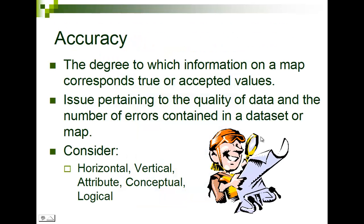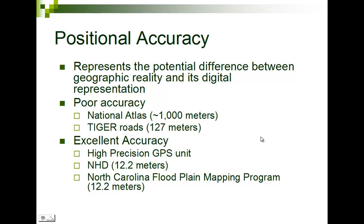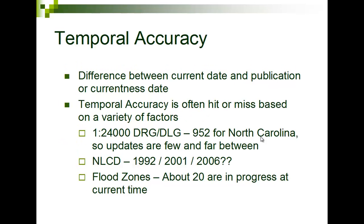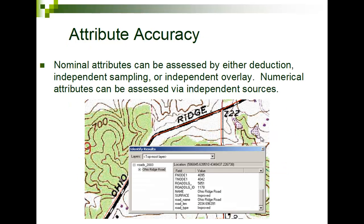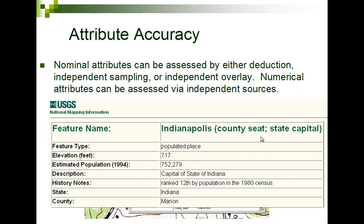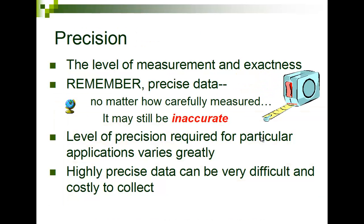We also have accuracy — how far is something from geographic reality? Is that X on the map really there? We have temporal accuracy, meaning how recently was it created. We have attribute accuracy — does the attribute say Richmond and is it really Richmond? And there are ways to check on this. Then we have precision, which means how many decimal points we store. If I'm representing average family size — people divided by families — and I store it as an integer like 1, 2, 3, 4, I don't have a lot of precision. I might want to store it to 2, 3, or 4 decimal points.